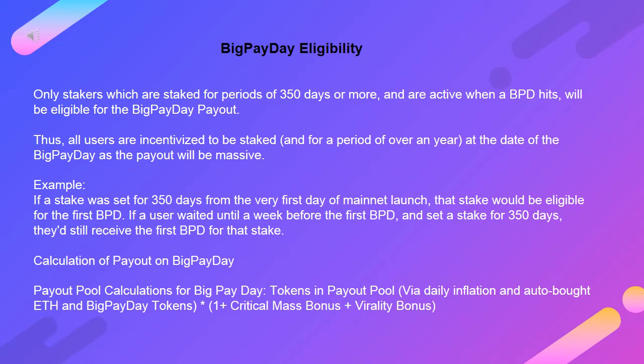Big Payday eligibility: only stakers who are staked for periods of 350 days or more and are active when a Big Payday hits will be eligible for the Big Payday payout. All users are therefore incentivized to be staked for a period of over a year at the date of their Big Payday, as the payout will be massive. Example: if a stake was set for 350 days from the very first day of mainnet launch, that stake would be eligible for the first BPD. If a user waited until a week before the first BPD and set a stake for 350 days, they'd still receive the first BPD for that stake.